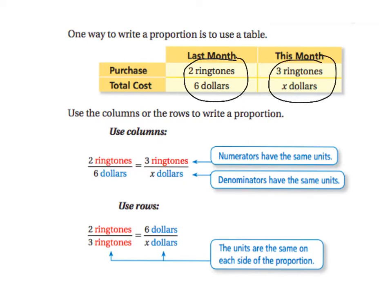It says use the columns or rows to write a proportion. So when we write a proportion, we simply take the information and write it as fractions. So we can write it as ringtones to ringtones, so they're next door to each other, like they are in the table, and dollars to dollars.